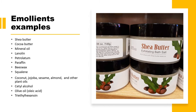Emollients are the building blocks of cosmetics, with wide applications in creams such as vanishing cream and moisturizing cream, where they increase hydration levels and reduce water loss from the skin. Examples include butter sources like shea butter and cocoa butter, mineral oils, lanolin, petrolatum jellies, paraffin, beeswax, and squalene. Various oils such as coconut oil, jojoba oil, sesame oil, almond oil, and other plant oils are also used, along with alcohols like cetyl alcohol, olive oil, and triethylhexanoate.